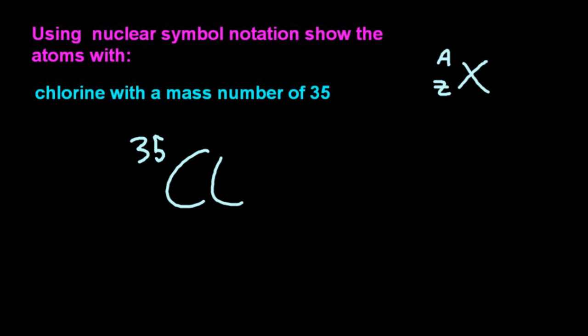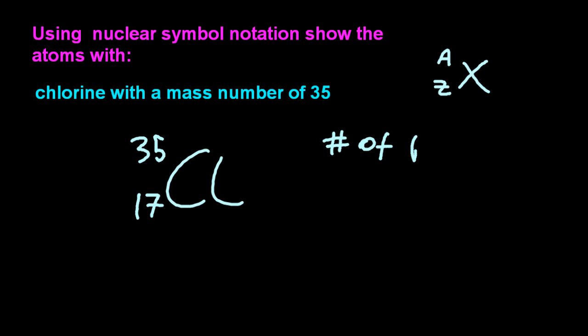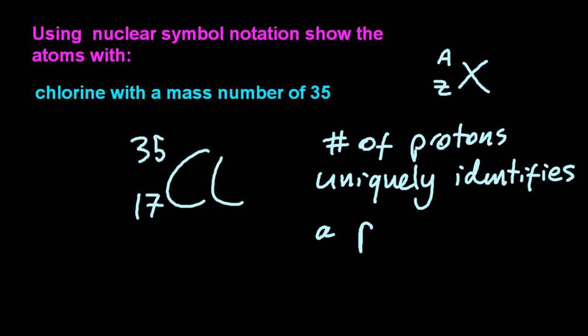The mass number, confusingly that is A, we like to put that at the top, so that's 35. Well how many protons are there? You just have to look at the periodic table to get the protons for chlorine. Chlorine has 17 protons. If you find something that doesn't have 17 protons then it isn't chlorine. The number of protons uniquely identifies that element.